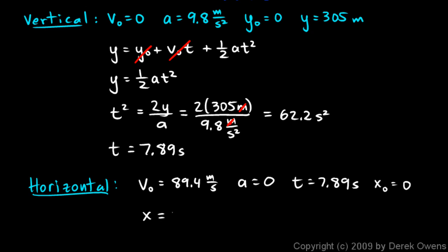And we're just going to use this equation, x equals v times t. We're not going to write out v0t plus 1 half at squared because there's no acceleration. There's no initial position. So just x is v times t. And we'll put in those numbers: 89.4 meters per second times 7.89 seconds. Seconds cancel, leaving us with meters. And we get 705 meters.